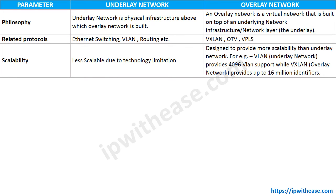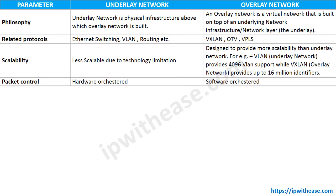Next is scalability. The underlay network is less scalable due to the limitations of the technology, while scalability is the forte of overlay networks, which is why they have become so popular. VLAN can only support 4,096 VLAN segments, but VXLAN can go much beyond that — up to 16 million segments can be created.